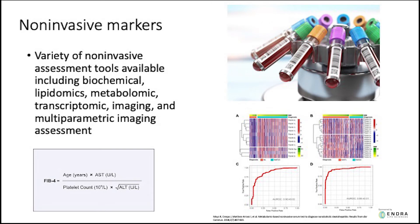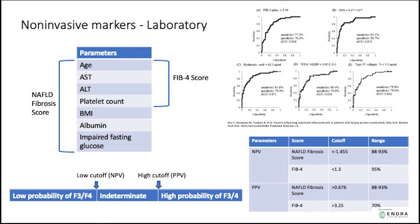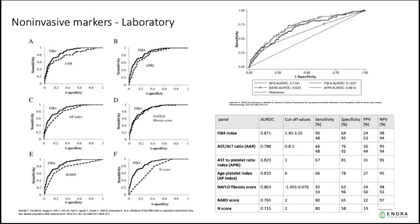In terms of non-invasive markers, there is a variety of tools available. These include serum markers such as biochemical markers, lipidomics, metabolomics, and transcriptomics, as well as imaging biomarkers and combinations of both. Looking at non-invasive laboratory serum markers, a number of different scores have been used, including the FIB4 index and the NAFLD fibrosis score. They assess parameters including age, AST, ALT, platelet count, BMI, albumin, and signs of insulin resistance. A number of these different non-invasive markers have a variety of different AUROCs.